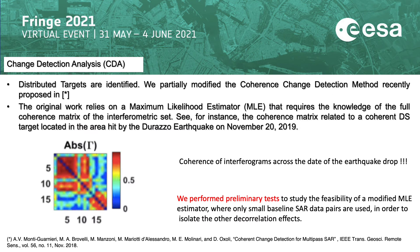The aim of this investigation is to identify distributed targets. To do this, we have partially modified the coherence change detection method recently proposed in the paper mentioned here. The original work relies on a maximum likelihood estimator requiring the knowledge of the full coherence matrix — in other words, the entire possible set of coherence interferograms and coherence maps. We have done some experiments to understand if a reduced number of interferograms — not the complete full coherence matrix, but only a portion of the coherence matrix — can be suitable to obtain change detection maps.